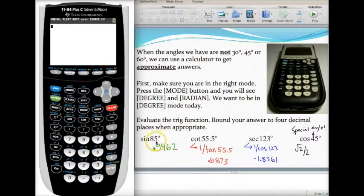So to find the sine of 85, it's just as simple as typing in sine, regular sine, type in 85, and there is the sine of 85. Notice I've already rounded to four decimal places. Four should be plenty for what we're doing.